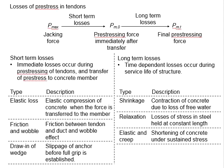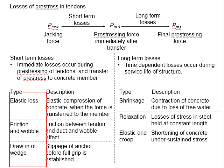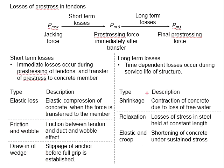In the previous videos we have mentioned about the short-term losses and the long-term losses. Short-term losses happen at the transfer of the pre-stressed concrete member, and the long-term losses appear due to the long period of time during the service life of the structure. There are three types of short-term losses: elastic losses, friction and wobble, and draw-in of wedges. There are also three types of long-term losses: shrinkage, steel relaxation, and creep of concrete.